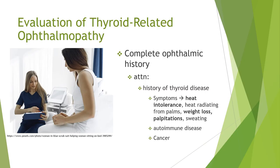When evaluating for thyroid-related ophthalmopathy, it's always important to take a complete ophthalmic history. Pay attention to any history of thyroid disease and what symptoms the patient has been noticing. Heat intolerance, weight loss, and palpitations are quite good indicators for thyroid disease. Ask if the patient has any other medical conditions, especially autoimmune diseases. Finally, rule out B symptoms: night sweats that drench their pajamas, fever, or unexpected significant weight loss of around 10%.